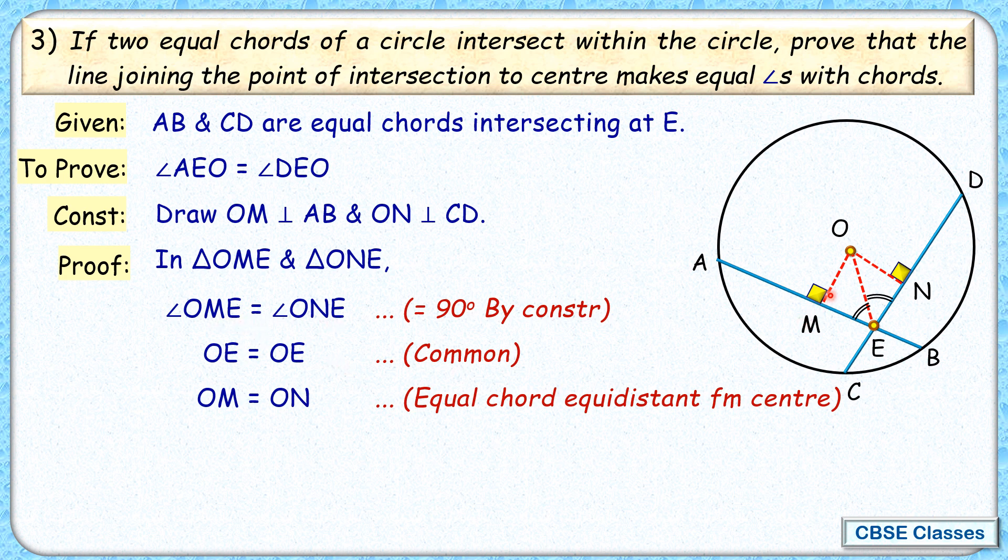Now let's see here. OME this is right angle and then you have got OE as hypotenuse and OM as side. So right angle hypotenuse side. So we can say that these triangles OME and ONE are congruent by RHS, right angle hypotenuse side congruency.